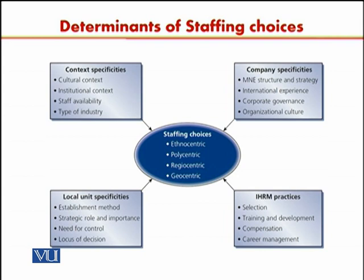What is the cultural context? What is the institutional context? Then, whether there is staff availability in that particular multinational and in that particular country or set of countries. And then, what is the type of industry? As we discussed in previous topics, the type of industry is going to affect what type of approach you can employ in staffing.